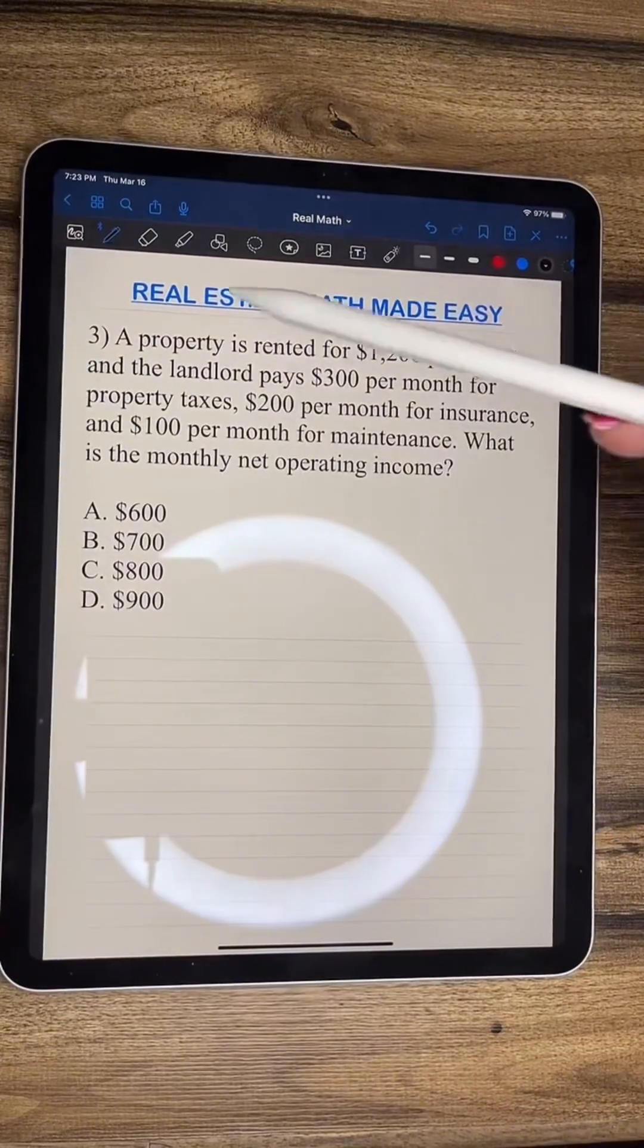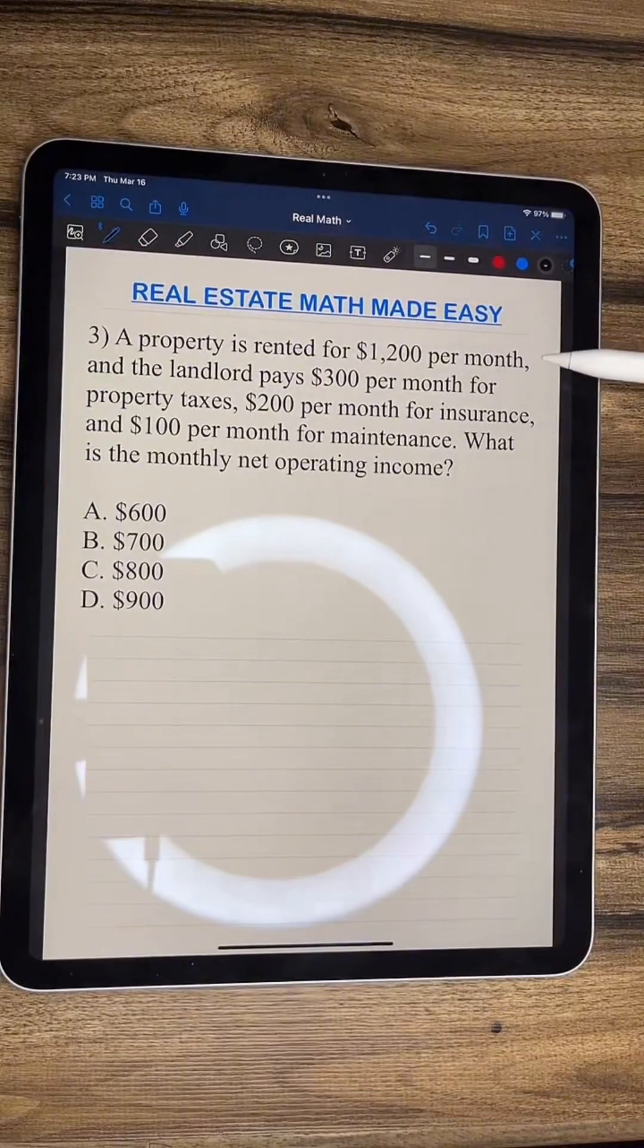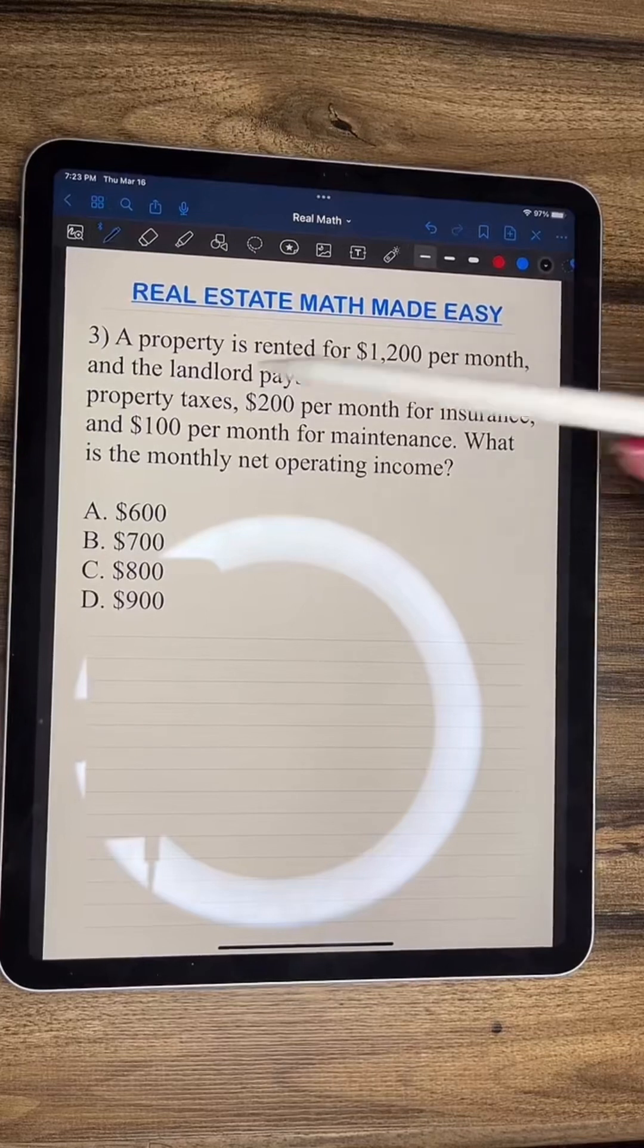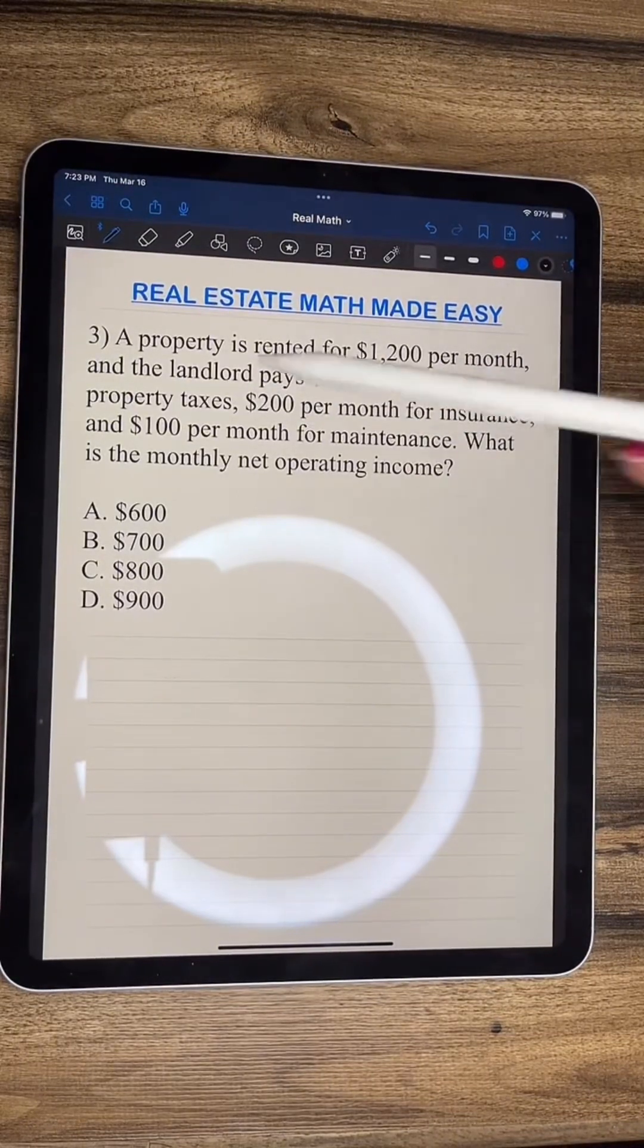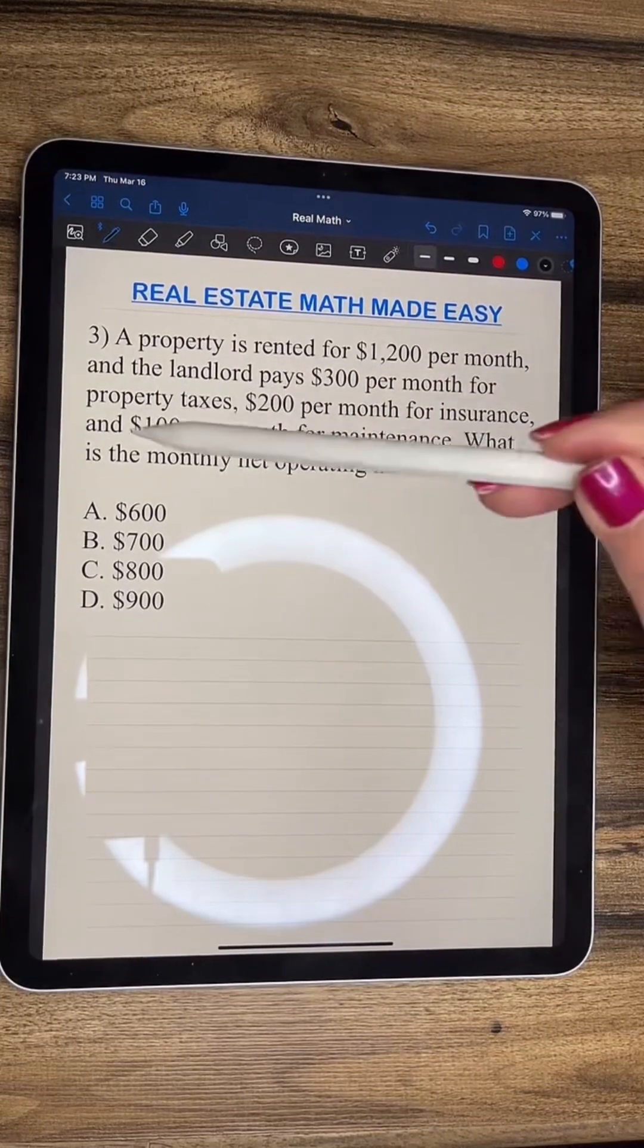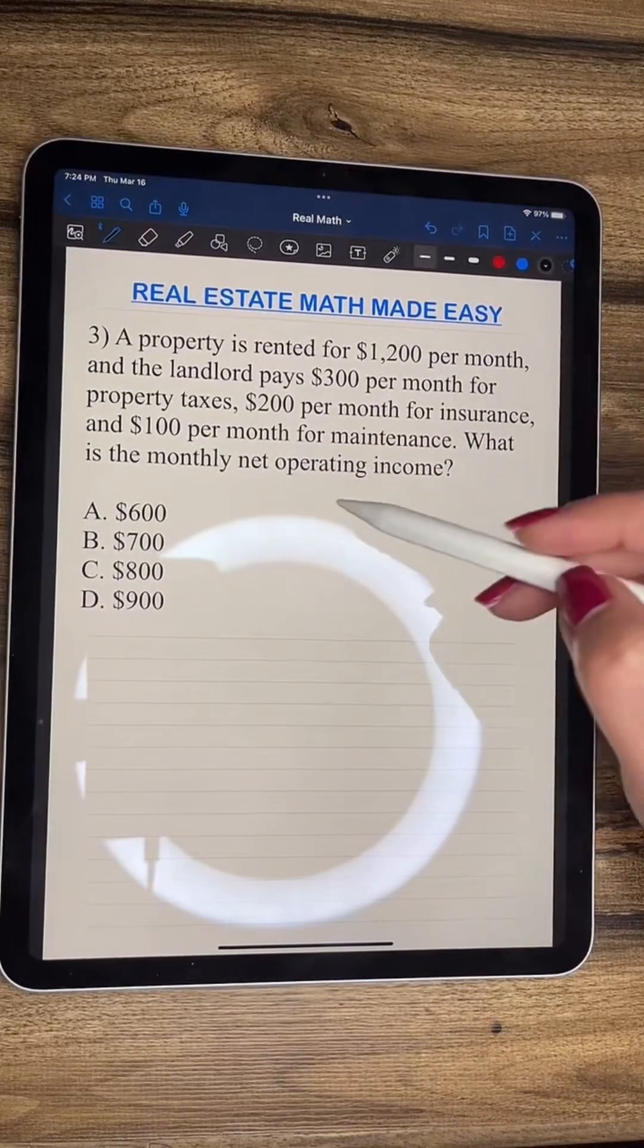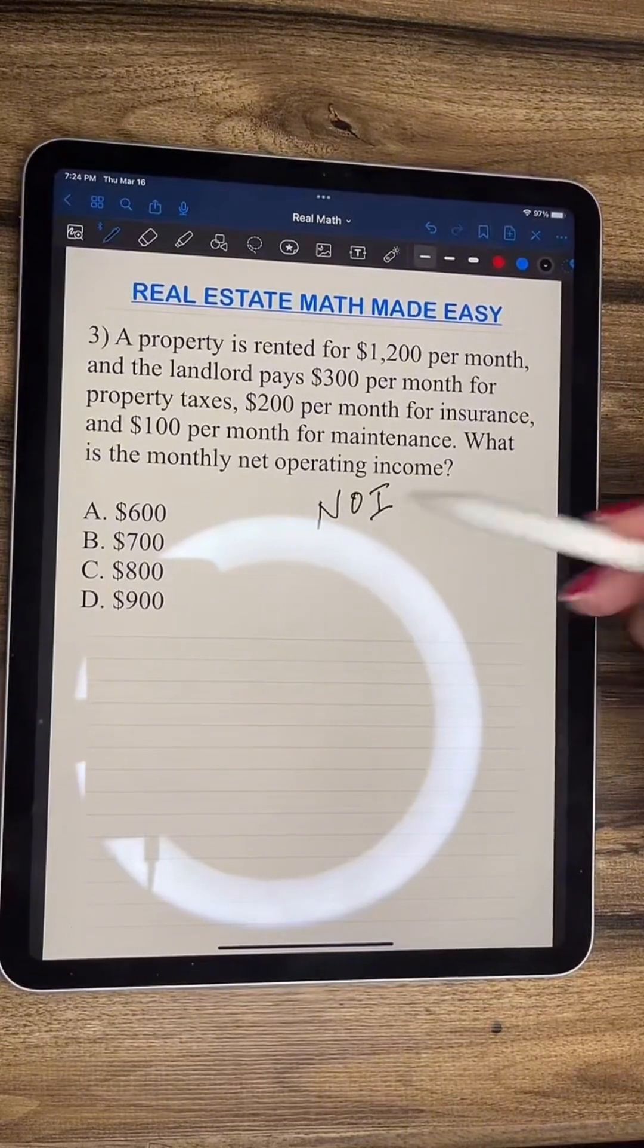So let's get started. It says a property is rented for $1,200 per month. And the landlord pays $300 per month for property taxes, $200 per month for insurance, and $100 per month for maintenance. What is the monthly net operating income? Okay, so this is also called NOI, net operating income.